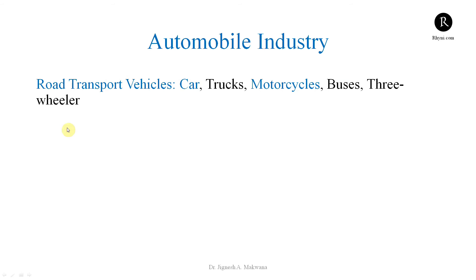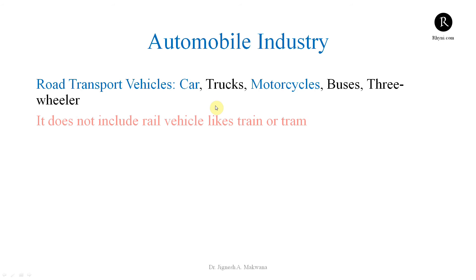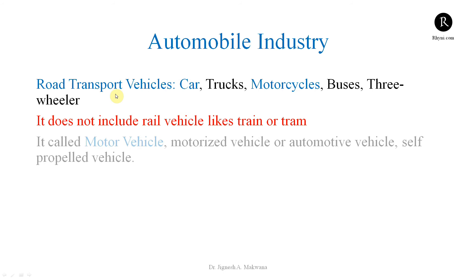In short, we are going to cover all kinds of road transport vehicles in this course. Remember, it does not include rail vehicles like trains or trams. We are focused on road transport vehicles under the automobile industry. It is called a motor vehicle, motorized vehicle, automotive vehicle, or self-propelled vehicle — different names are given. The most famous and most used term is motor vehicle.